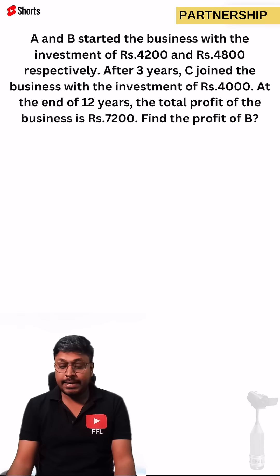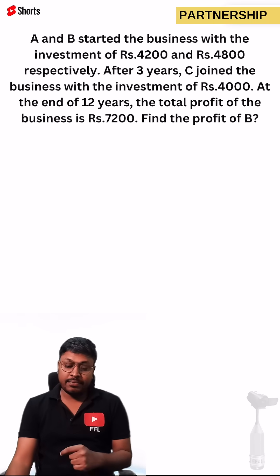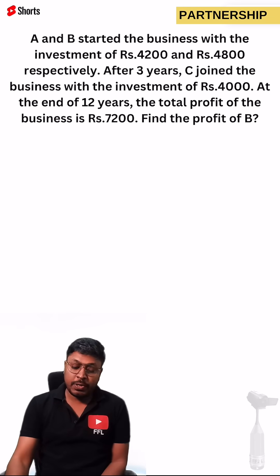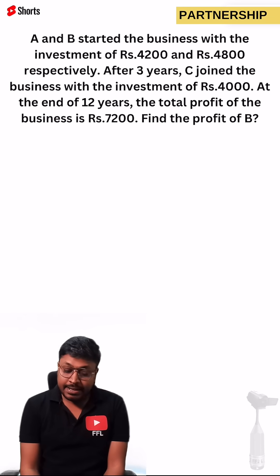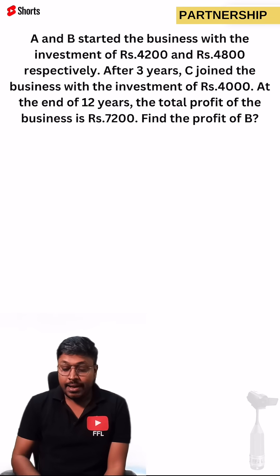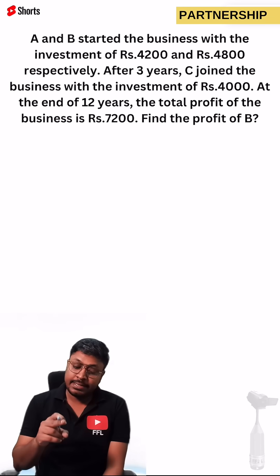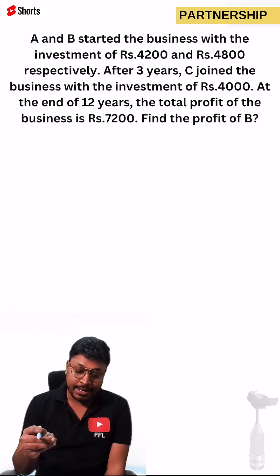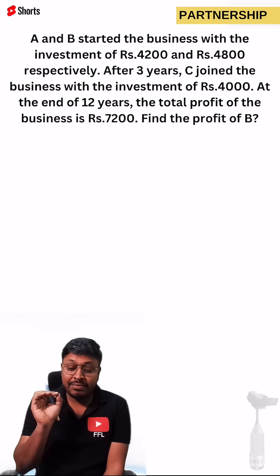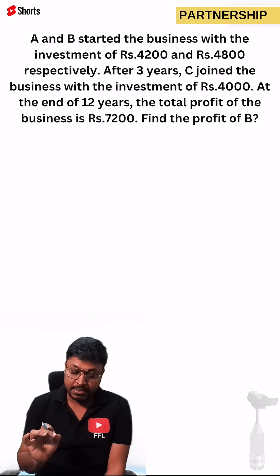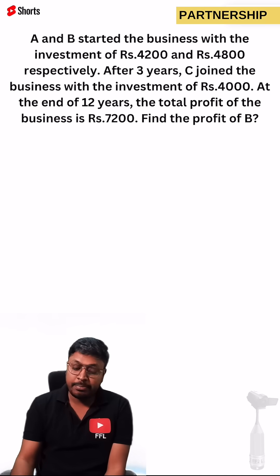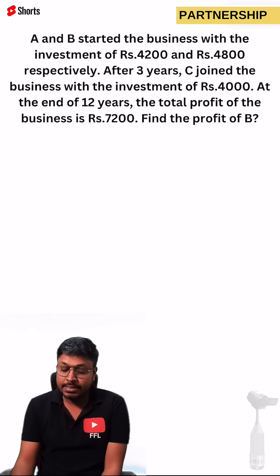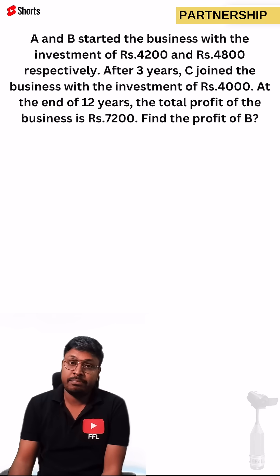A and B started the business with investments of 4,200 and 4,800 respectively. After three years, person C joined the business with an investment of 4,000. At the end of 12 years, the total profit of the business is 7,200. Find the profit of B.